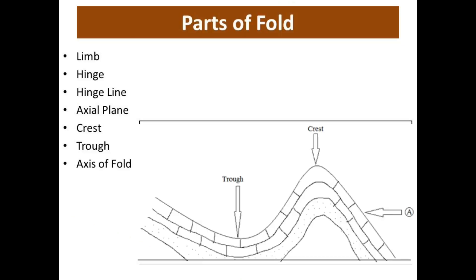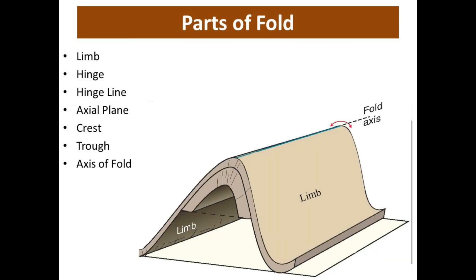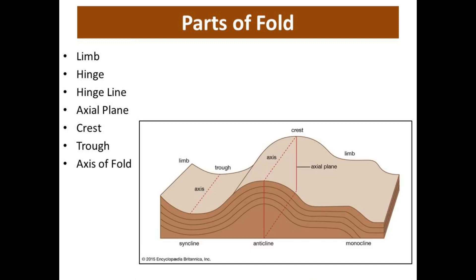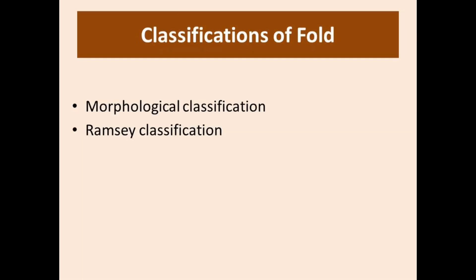Then the crest and trough: the highest point on a fold is called the crest and the lowest point is called the trough. The last part is the axis of fold, which is the line of intersection between the axial plane of a fold and the surface of any consistent rock bed.